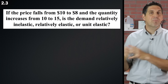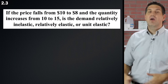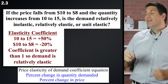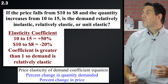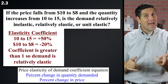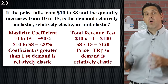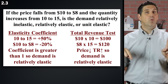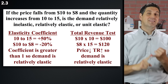On a test, your teacher might say the price fell from $10 to $8 and quantity increased from 10 to 15. Using the elasticity coefficient, that's a 50% change in quantity from a 20% change in price, making it elastic since the coefficient is greater than one. Using the total revenue test: before was $100, after is $120 — price went down, total revenue went up, elastic demand. Make sure you can do both the calculations and the total revenue test.